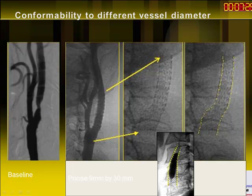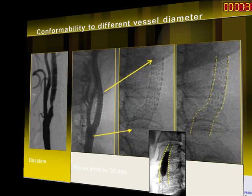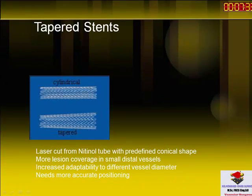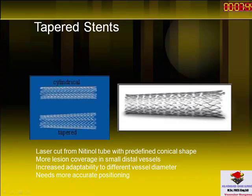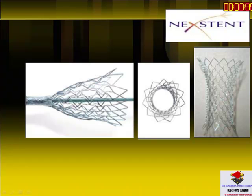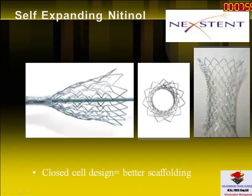Comfortability is better in nitinol stents compared to mesh wire stents, and this is an example of a carotid case done with a nitinol stent. Tapered stents were a good idea in the beginning, but in clinical practice it is very difficult to match patient anatomy with a conical shape. The Nexus stent, with its closed cell design and distal flare on each side, is a self-expandable nitinol stent with very good lesion scaffolding.